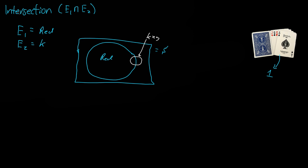So what an intersection means is when we have event one and event two. So we want a red card and a king. So that is right here, where it is red and it is also a king, so this is the intersection.